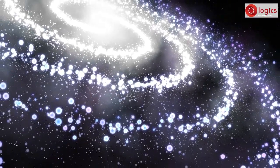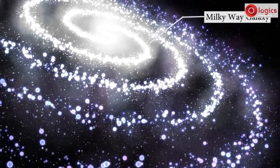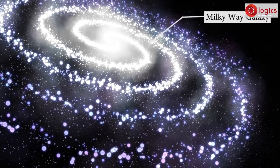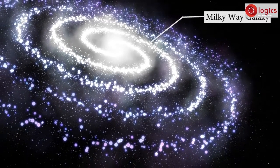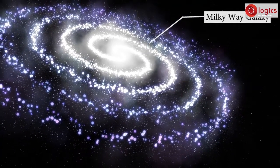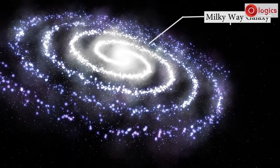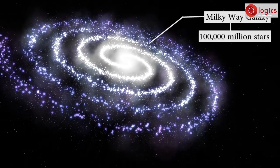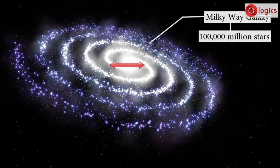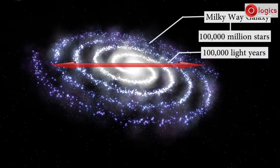Our solar system is in the Milky Way galaxy, which is a spiral galaxy. It contains about one lakh million stars. The diameter of the Milky Way is one lakh light years.